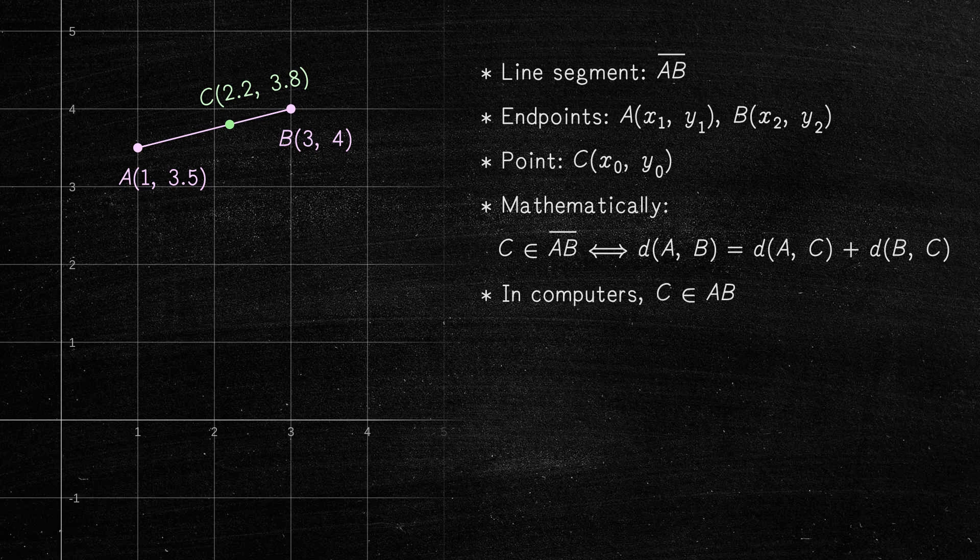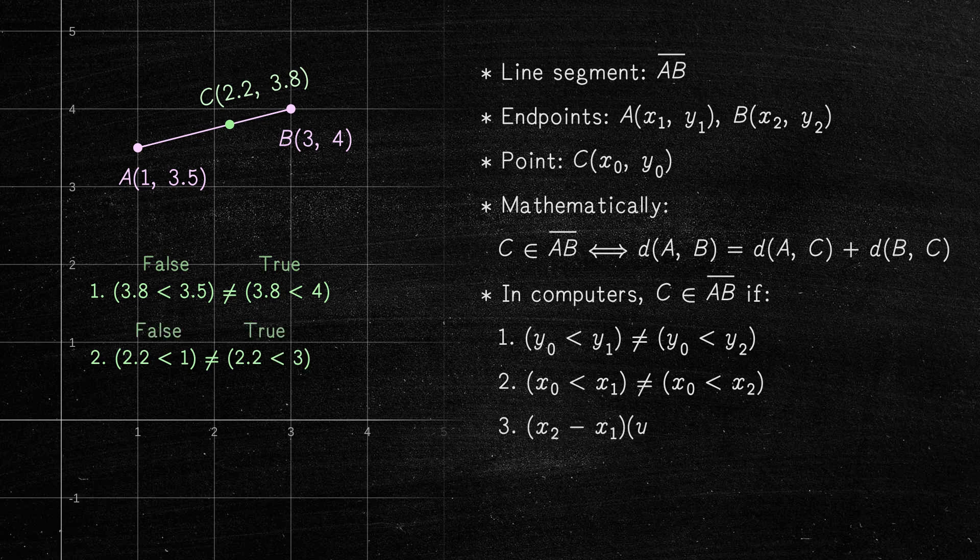The point C lies on the line segment AB if the following three conditions are met. The point C is between A and B in both the horizontal and vertical axes. And the slope of the line segment AB is equal to the slope of the line connecting C and either A or B.